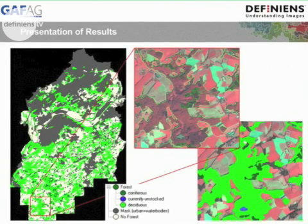On this slide you see the final result. On the left hand side you see the whole patch we have classified with the rule set — in shades of green you see the forest and in blue the currently unstocked class. On the right hand side you can see in more detail that the forest classification is quite good, and also the representation of the forest classes — coniferous and deciduous forest — is well done.